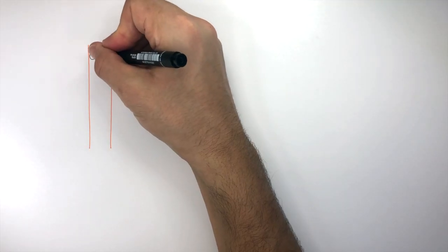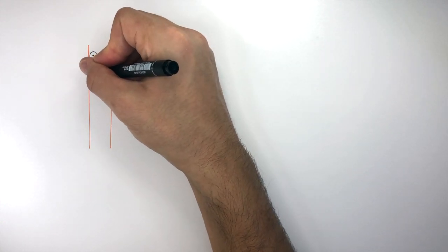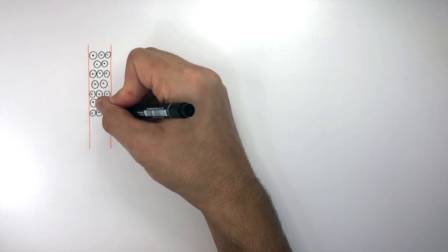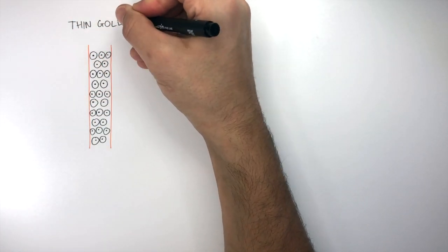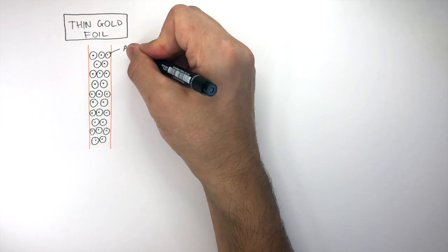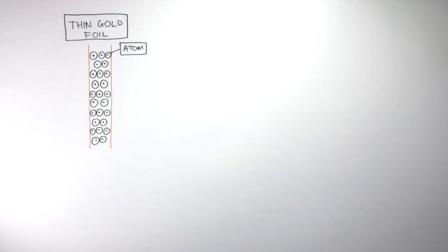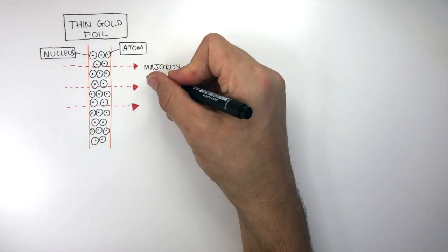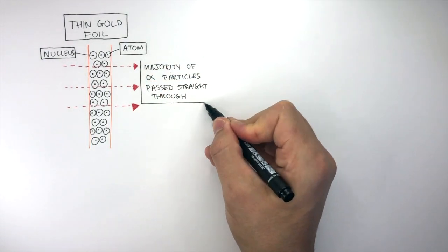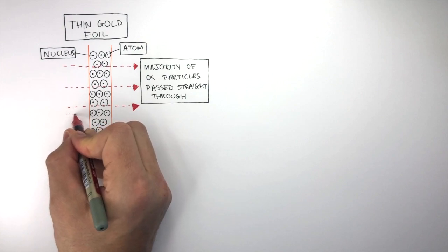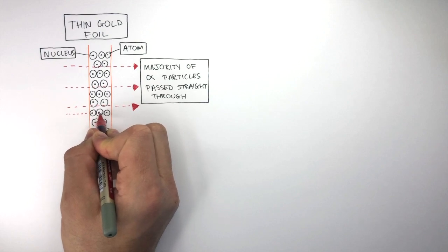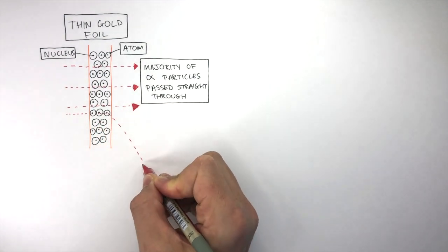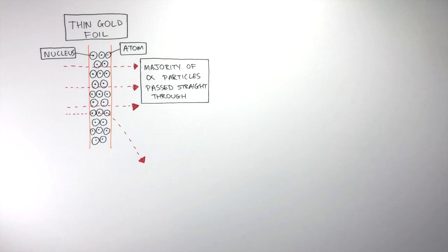To explain these results and understand how they concluded the Plum Pudding model was wrong, we need to look in more detail at how these alpha particles interacted with the atoms that make up the thin gold foil. These circles represent atoms, and at the centre of these circles is the nucleus. The straight red lines show how the majority of alpha particles pass straight through. Some alpha particles came in straight towards the atoms, got very close to the positive nucleus, and were deflected. This was not as common, and only some were deflected.